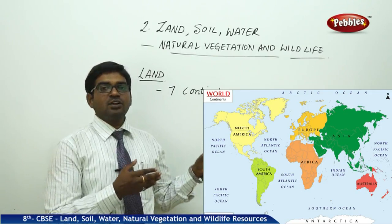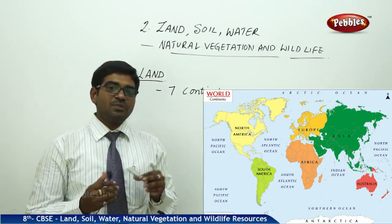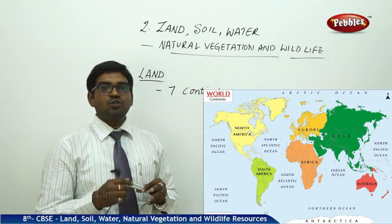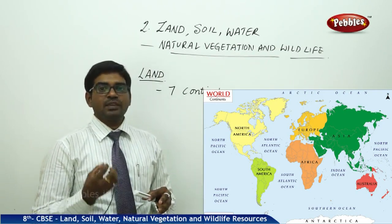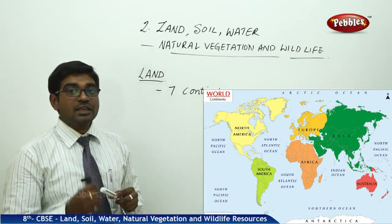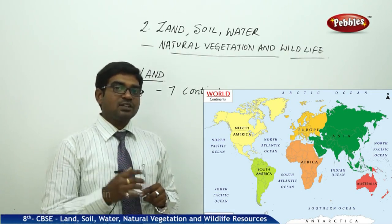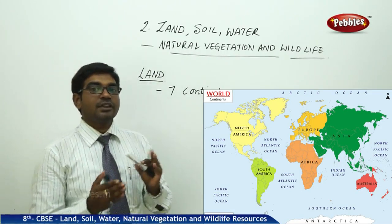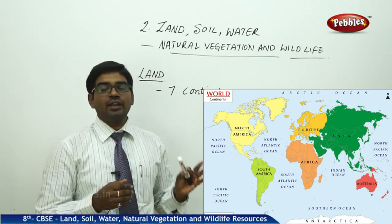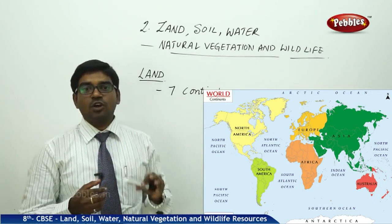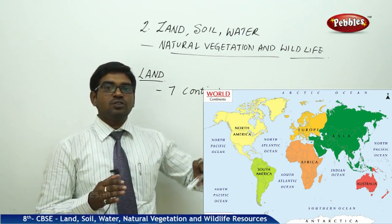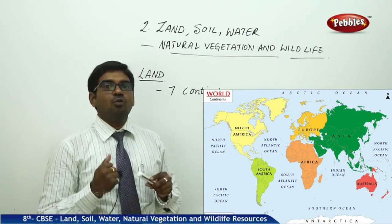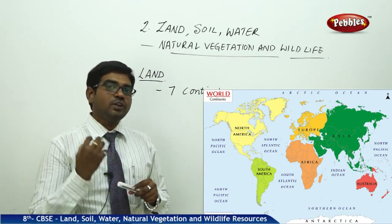Later, man moved towards plain lands and then to hilly regions. Today, we find people living in all elevated places and also nearby to water regions and seacoasts — everywhere on the land. This signifies the importance of land. For cultivation, we need good soil availability. Soil near water bodies is beneficial because underground water levels are good and the fertility of the soil is maintained through the flow of the river.